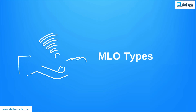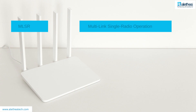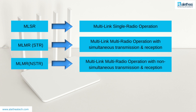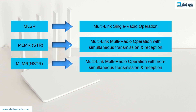Let's delve into the details of MLO types. Multi-link single radio operation would imply a change in the link used at a predefined time in the future. Multi-link multi-radio operation STR implies simultaneous transmission and reception on multiple links. Multi-link multi-radio operation NSTR would imply non-simultaneous transmission and reception on multiple links.